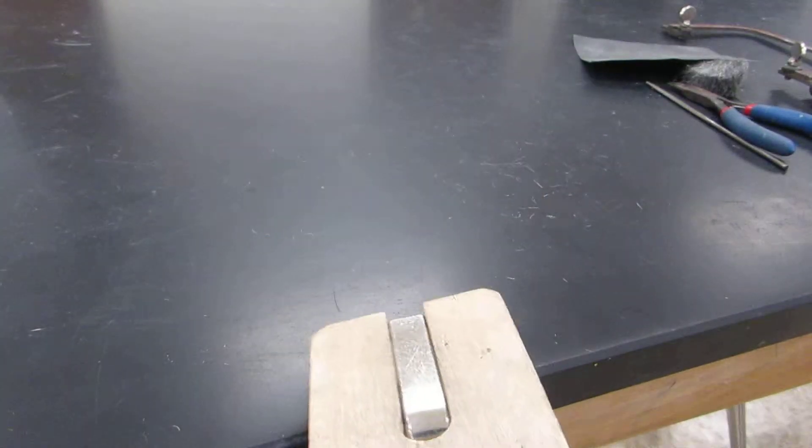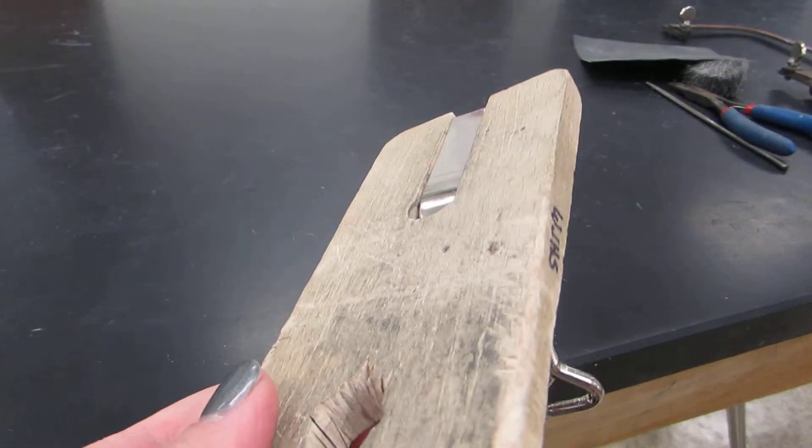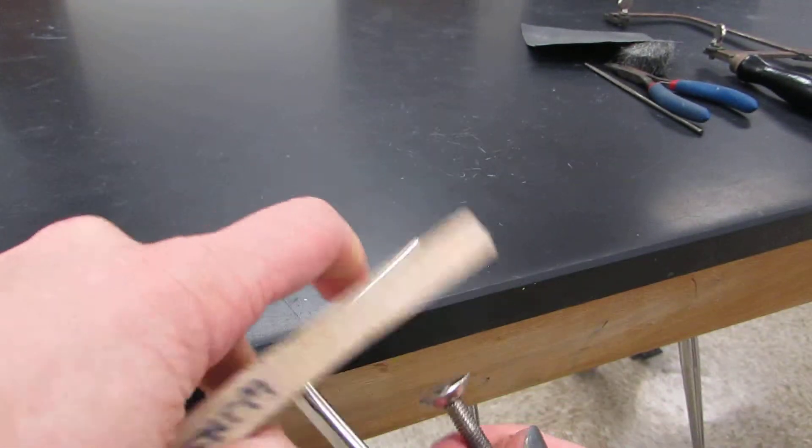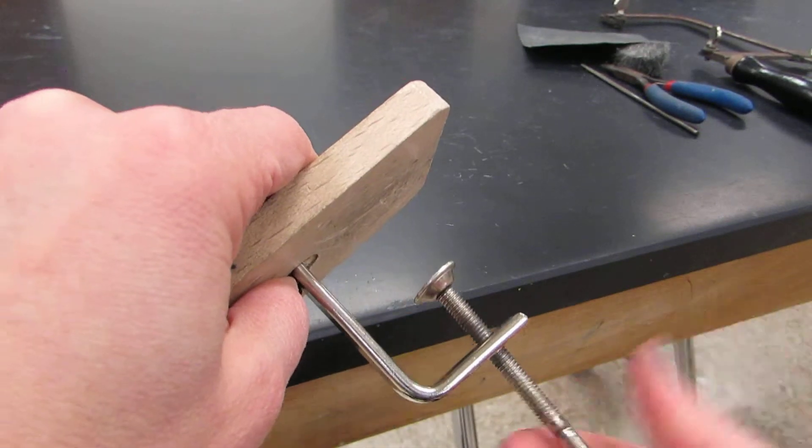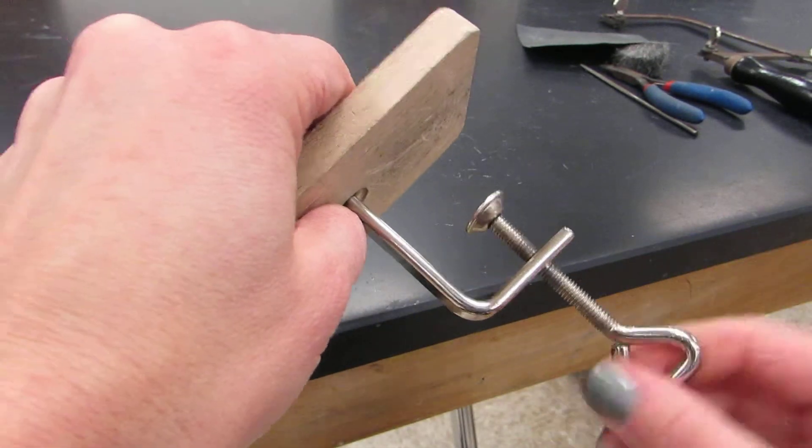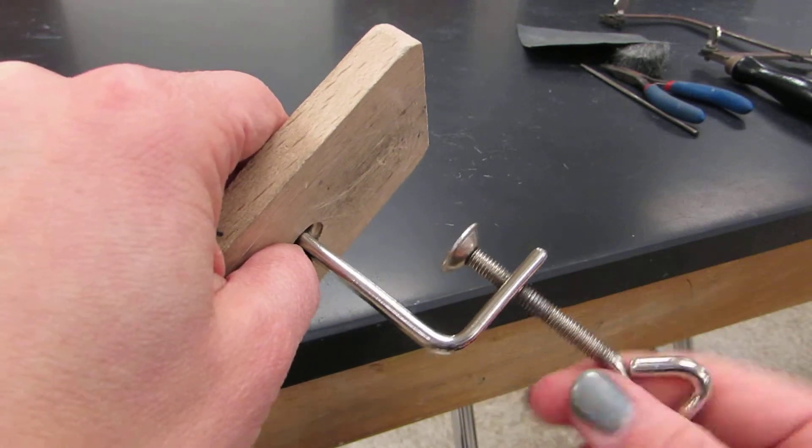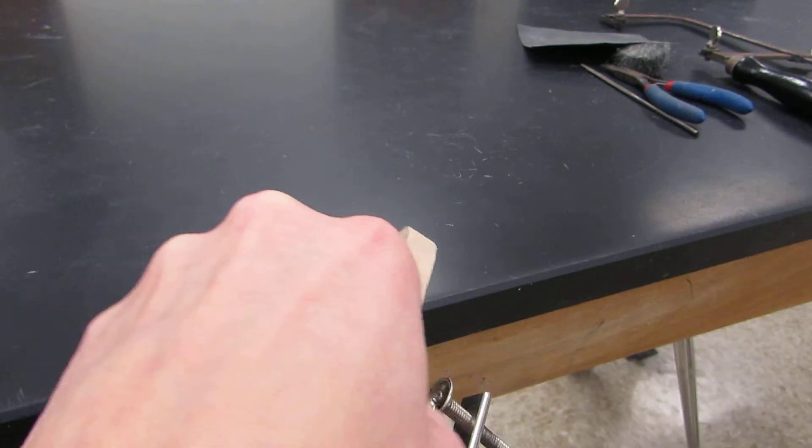Next, what you're going to be doing is clamping your bench clamp onto the side of the table. When you clamp it onto the side, you need to make sure that the screw is kind of down a little bit further, making sure that you are righty-tighty, lefty-loosey. Right now I'm going left to open it up.